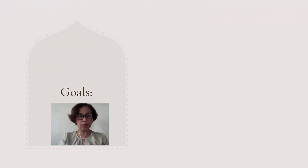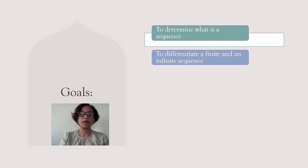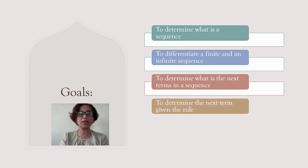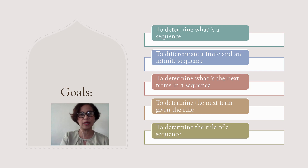These will be the goals for the day. We are going to determine what is a sequence, differentiate a finite sequence from an infinite one, determine what is the next term of a sequence, determine the next term given the rule, and work backwards to determine the general rule given the sequence. I hope you will find our topics for today very interesting.